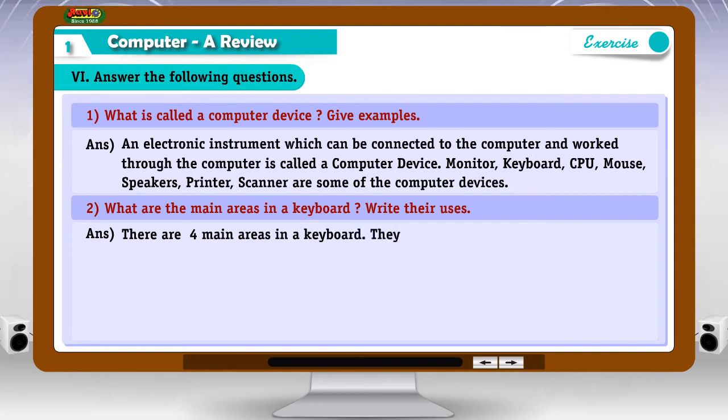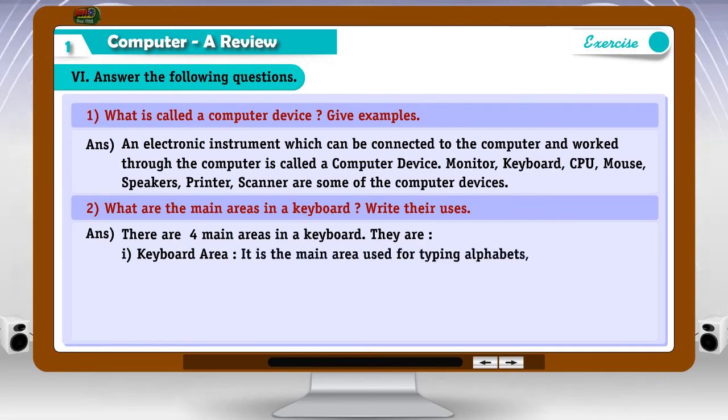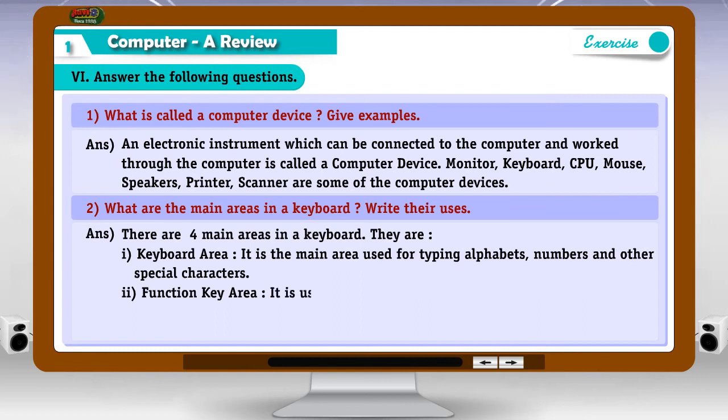They are 1. Keyboard area. It is the main area used for typing alphabet, numbers and other special characters. 2. Function key area. It is used to carry out special functions.